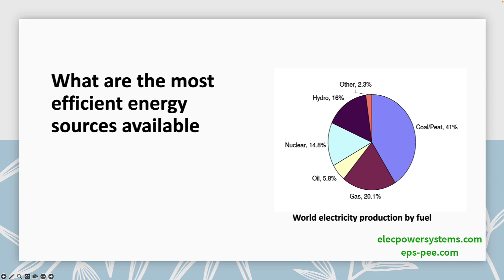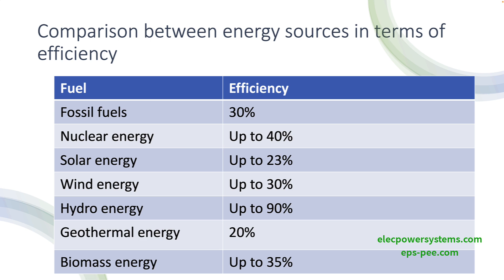This topic aims to compare the efficiency of various energy sources, both conventional and renewable, and examine the factors that affect their efficiency. It is difficult to make a direct comparison between all energy sources in terms of efficiency because each source has unique characteristics and varying degrees of efficiency depending on factors such as technology, location, and scale of operation. However, we can provide a general overview of the efficiency of different energy sources and their advantages and disadvantages.